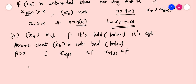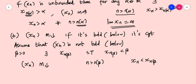Since XN is monotonic decreasing, for N greater than N_beta, XN is less than XN_beta, and XN_beta is less than beta. Therefore, XN is less than beta for all N greater than N_beta. This is the definition of a properly divergent sequence which diverges to minus infinity, which means the limit of XN equals minus infinity.